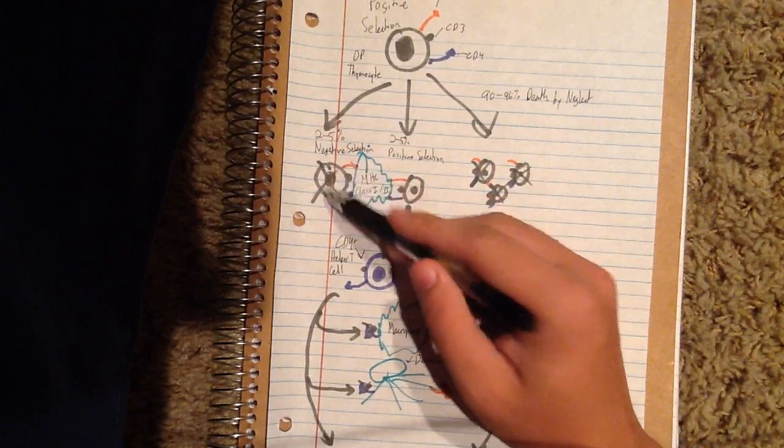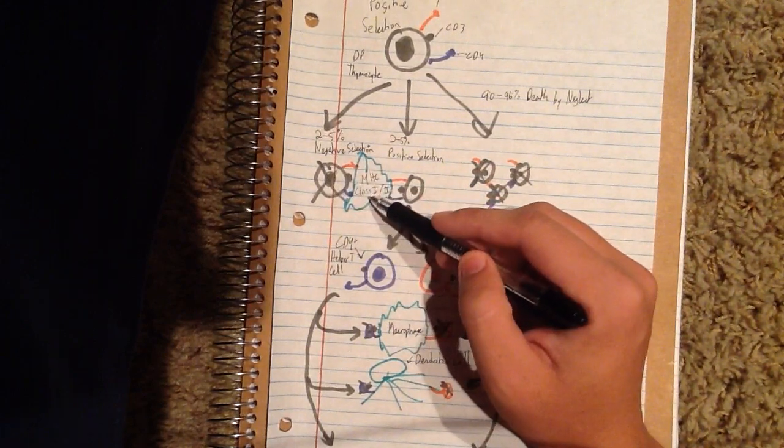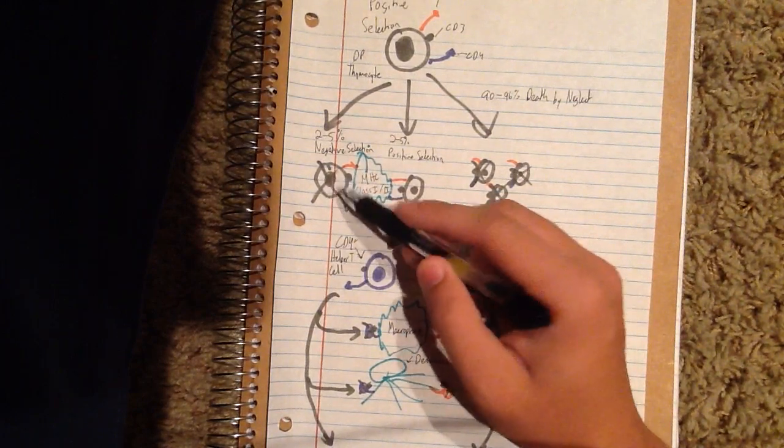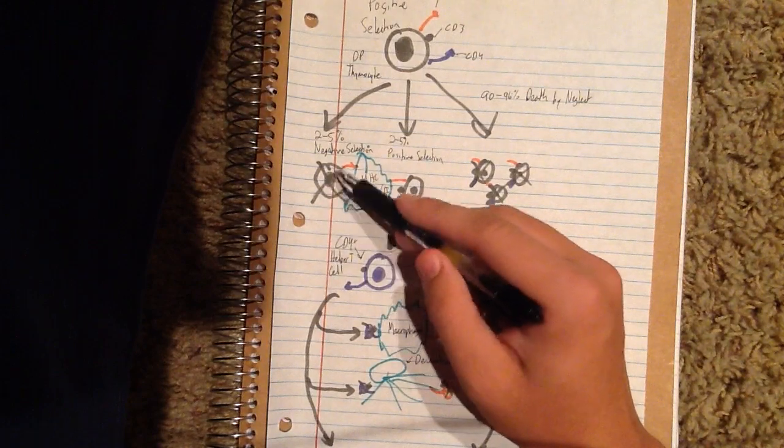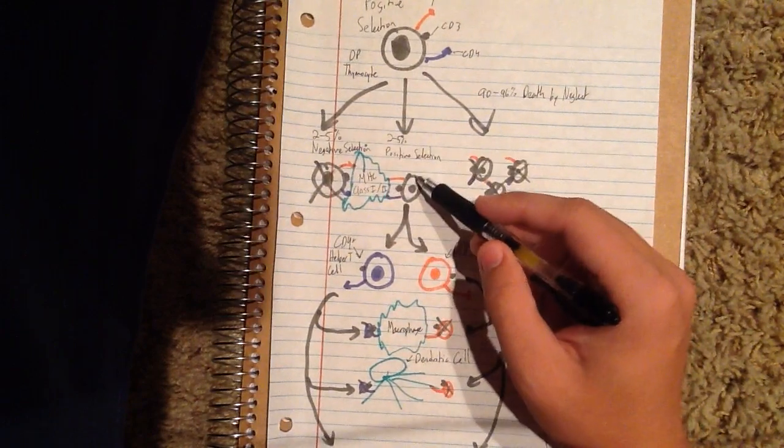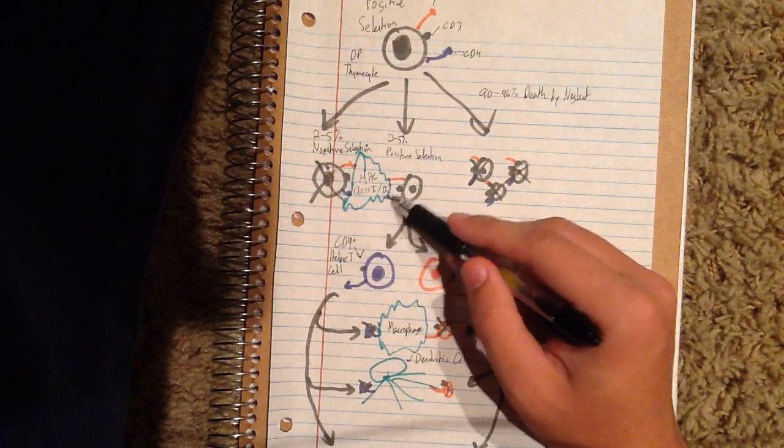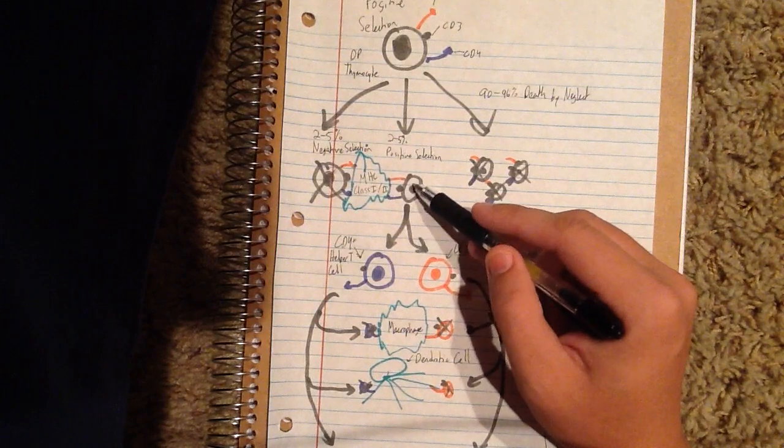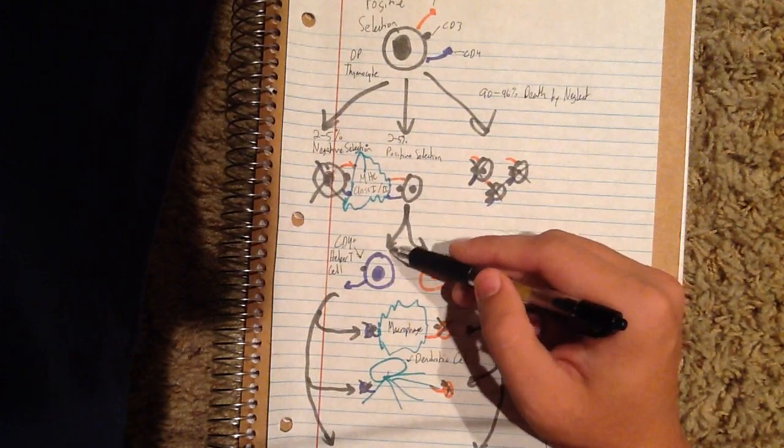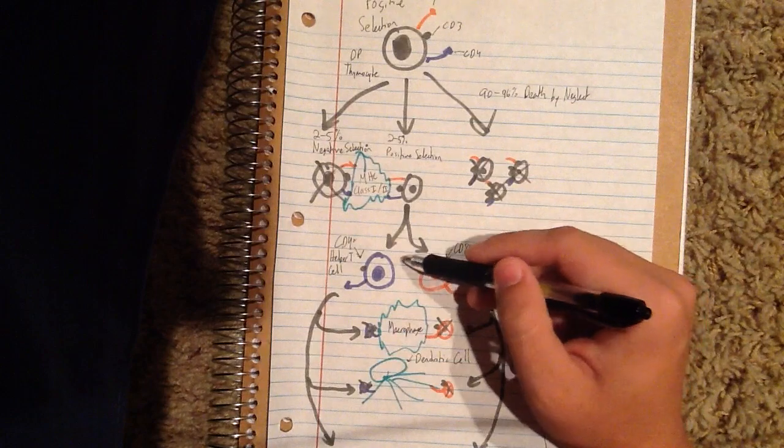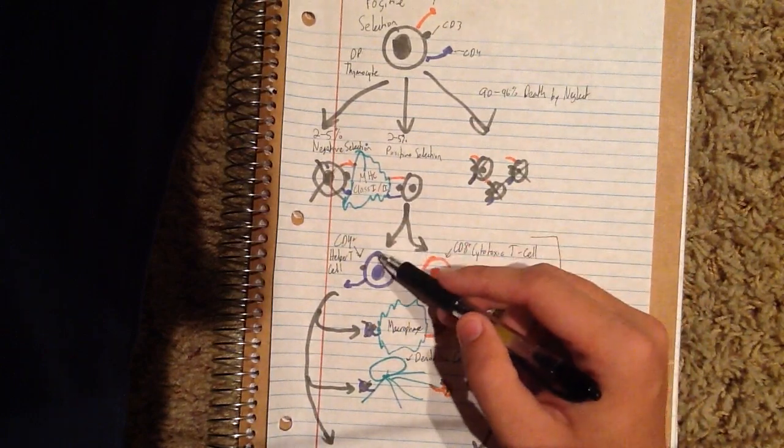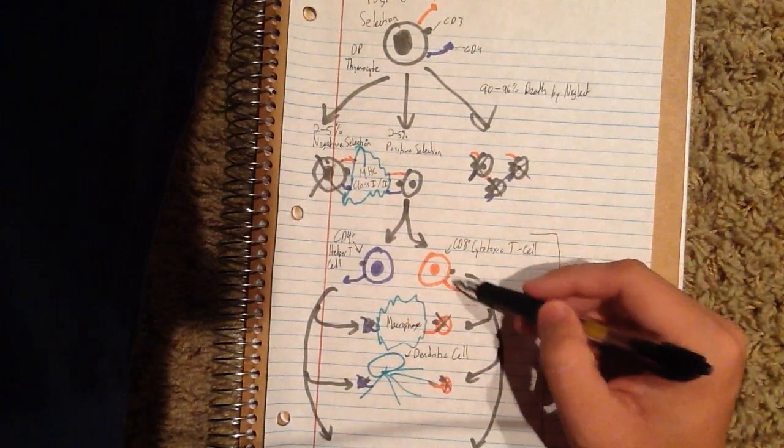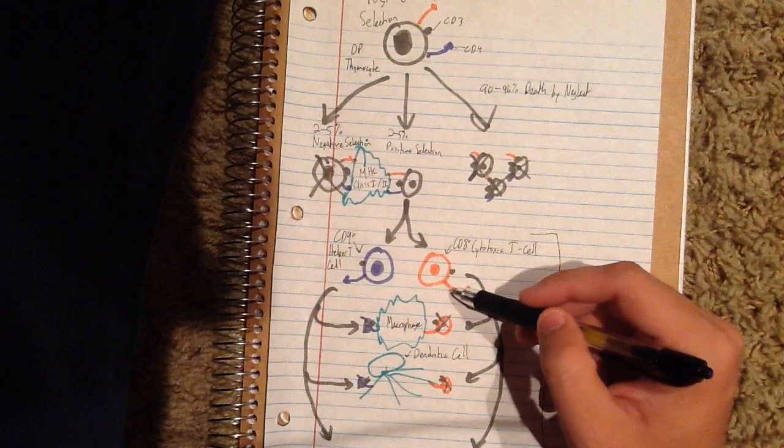It can undergo negative selection, which means that the MHC molecule is going to send the apoptosis signal to this thymocyte, and this thymocyte will die. It's going to commit apoptosis. Whereas in positive selection, the MHC class 1 or class 2 molecule will send a reproductive signal to this thymocyte. So now it's going to start making different cells, with this being a CD4 helper T-cell, or it can make a cytotoxic T-cell with a CD8 plus molecule.